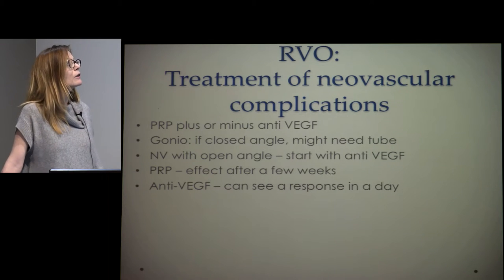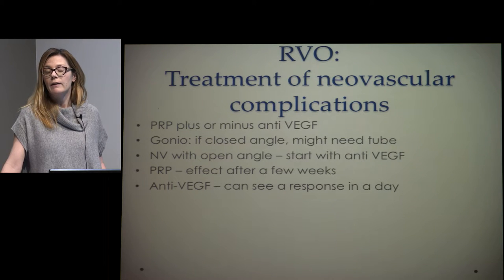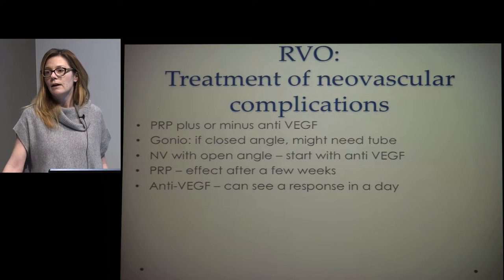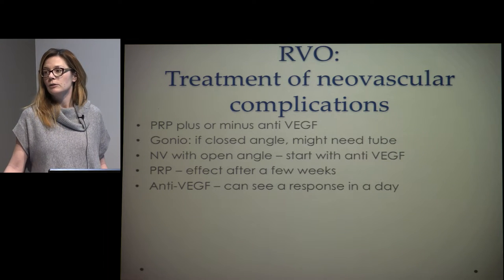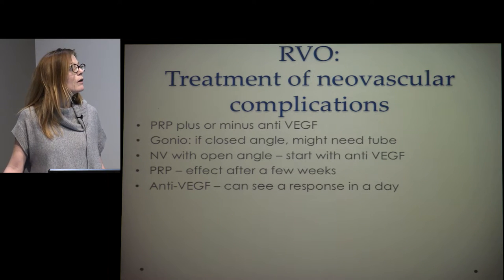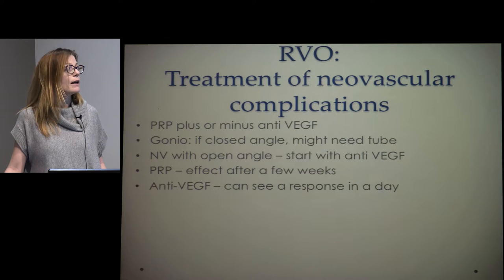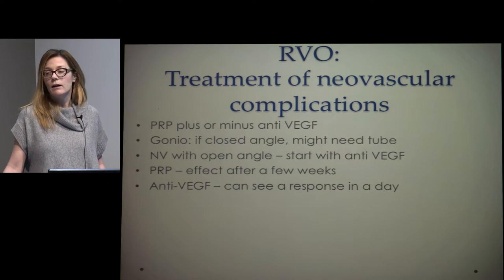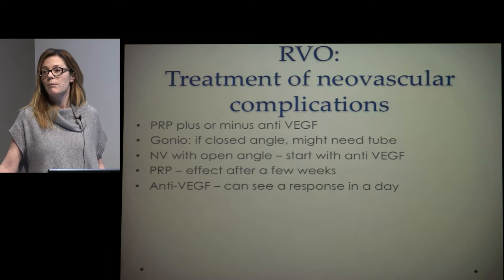For treating neovascular complications, really PRP plus or minus anti-VEGF agents. If they have florid neovascularization, I'm often working with the glaucoma team. They like anti-VEGFs to try and save the angle — especially with an open angle and neovascularization — because of the rapid response resolving those vessels. If they have a closed angle, glaucoma doctors are often placing tubes or valves. Anti-VEGF injections can show a pretty impressive response within 24 to 48 hours for neovascularization of the iris, while PRP takes several weeks to months. For milder neovascularization, I'll start with PRP; if it's pretty florid, I'll combine both.